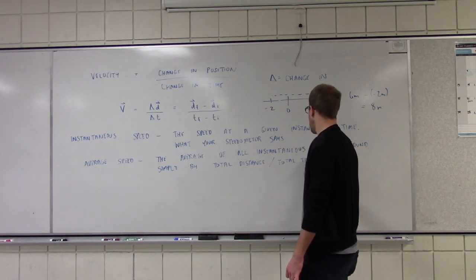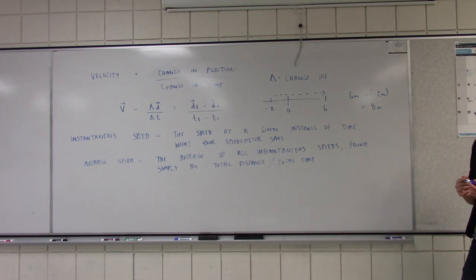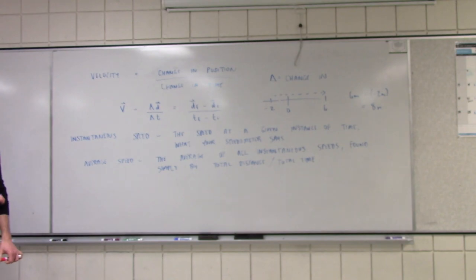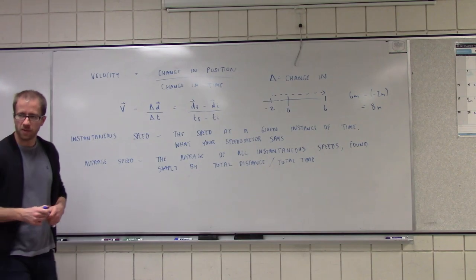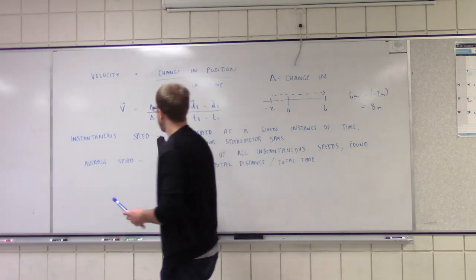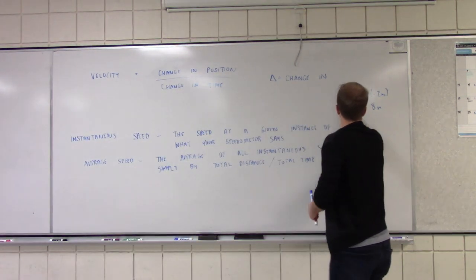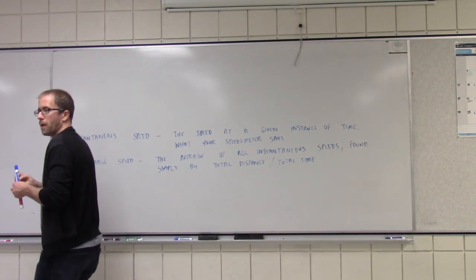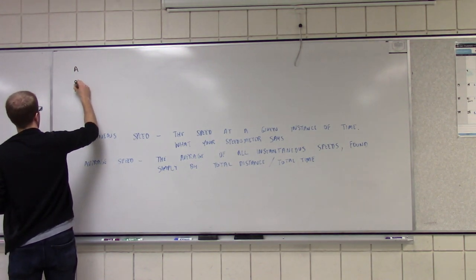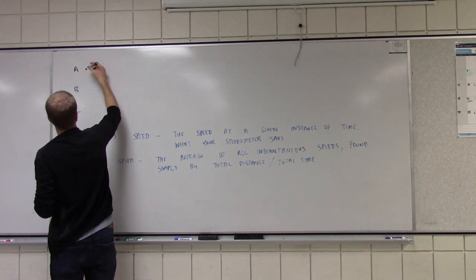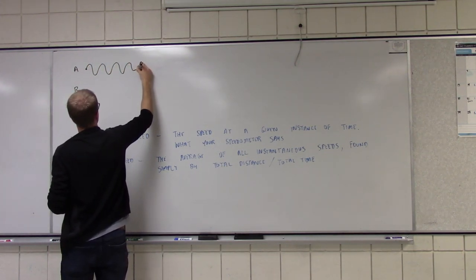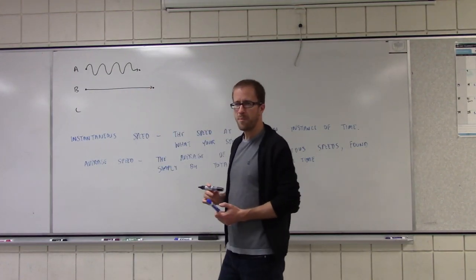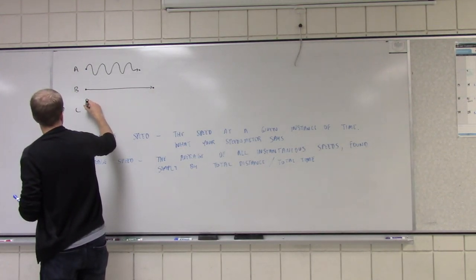That is the important distinction between instantaneous speed and average speed. So now that we got the theory out of the way, let's do a couple practice problems. We're going to start pretty simple — let's look at a couple paths. So let's say we have paths A, B, and C. Path A like this, path B like that, and path C — we're going to make this pretty extreme.